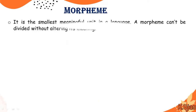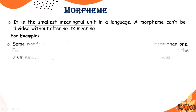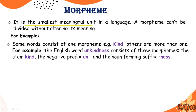Number one: what is a morpheme? It is the smallest meaningful unit in a language. A morpheme cannot be divided without altering its meaning. In easier words, a morpheme is the smallest meaningful unit. For example, some words consist of one morpheme.